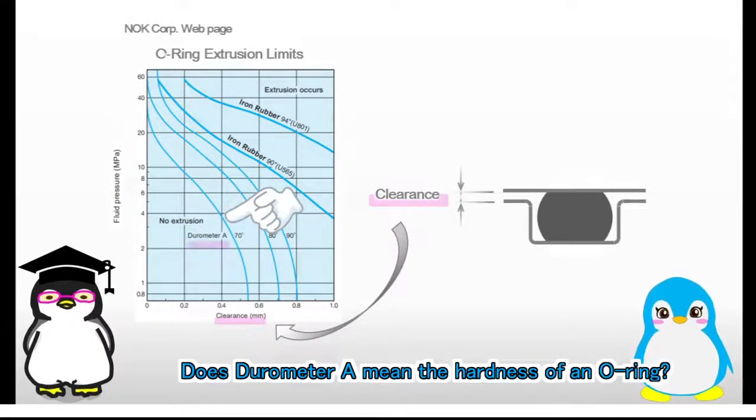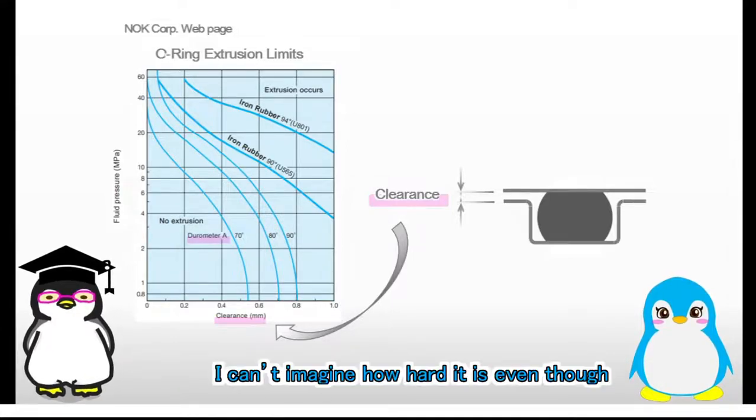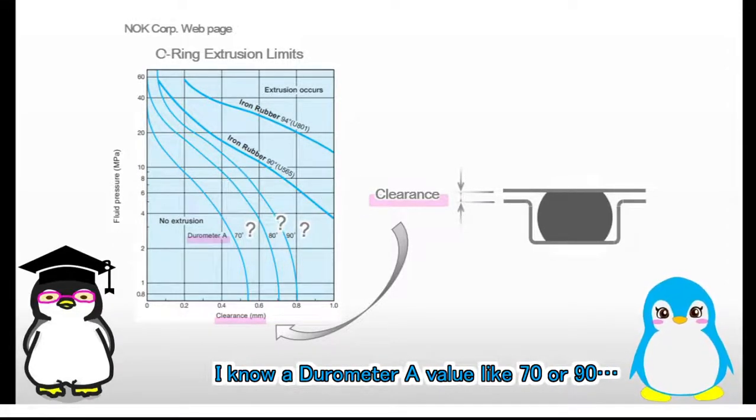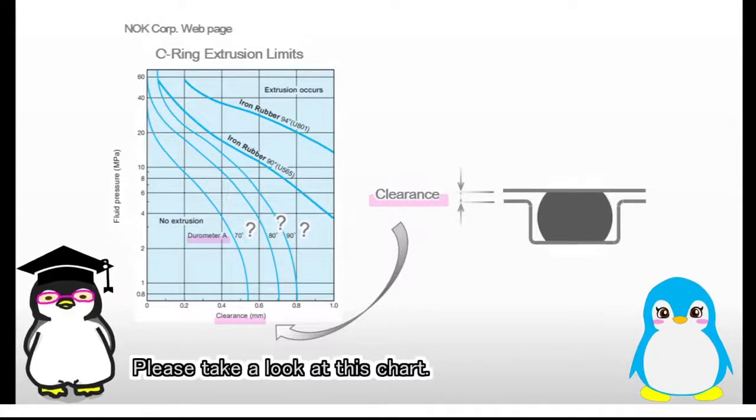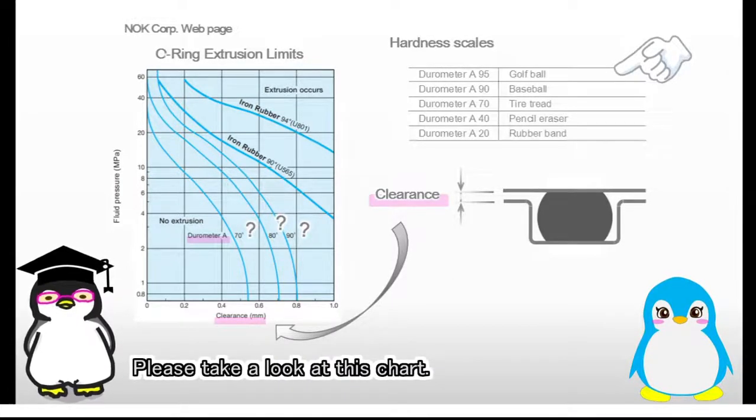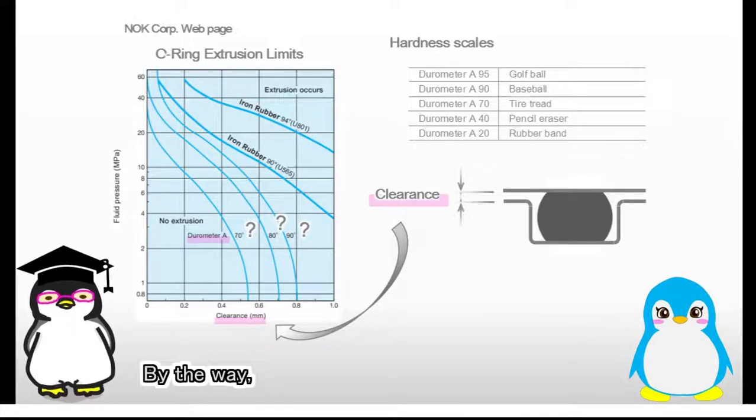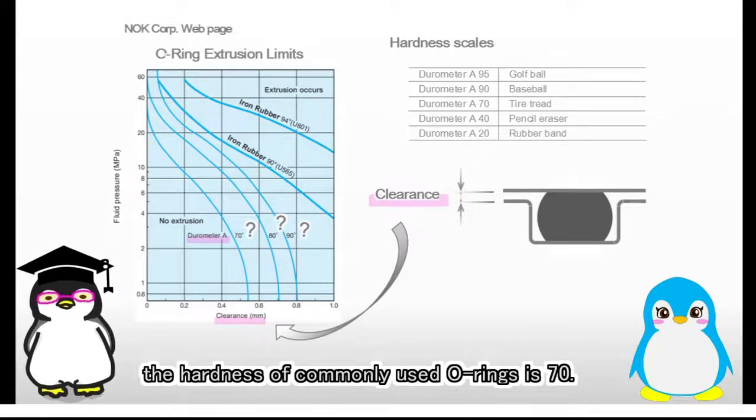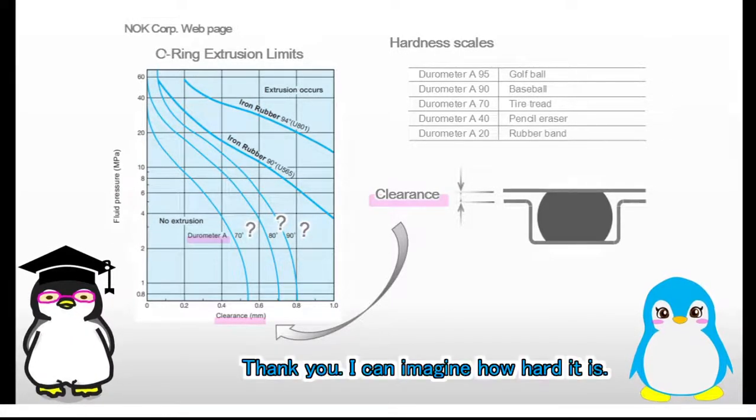Does durometer A mean the hardness of an O-ring? Yup. I cannot imagine how hard it is, even though I know a durometer A value, like 70 or 90. Please take a look at this chart. By the way, the hardness of commonly used O-rings is 70. Thank you. I can imagine how hard it is.